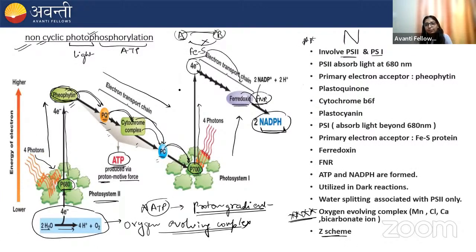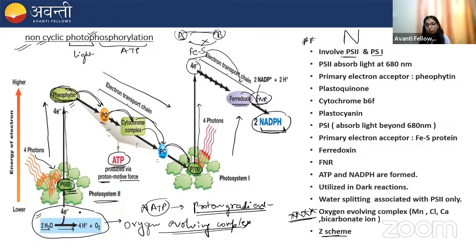One important point regarding non-cyclic photophosphorylation: when a photon falls on P680 (photosystem 2), the electron gets excited and is received by the primary acceptor pheophytin. Photosystem 2 is now deficient of electrons. This deficiency is compensated by the splitting of water. When water splits, oxygen is evolved and four electrons are generated, transferred to photosystem 2 one at a time — that is why the oxygen-evolving complex plays a very important role.